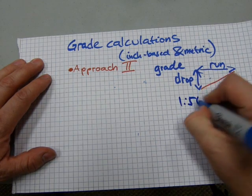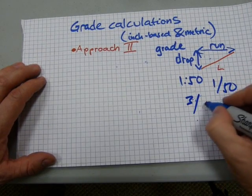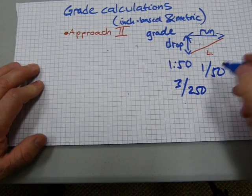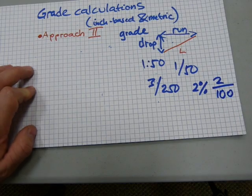Like so, 1 over 50, or 3 out of 250, or something like that. Or even a percentage, 2%, even a percentage is a fraction, a 2 over 100.